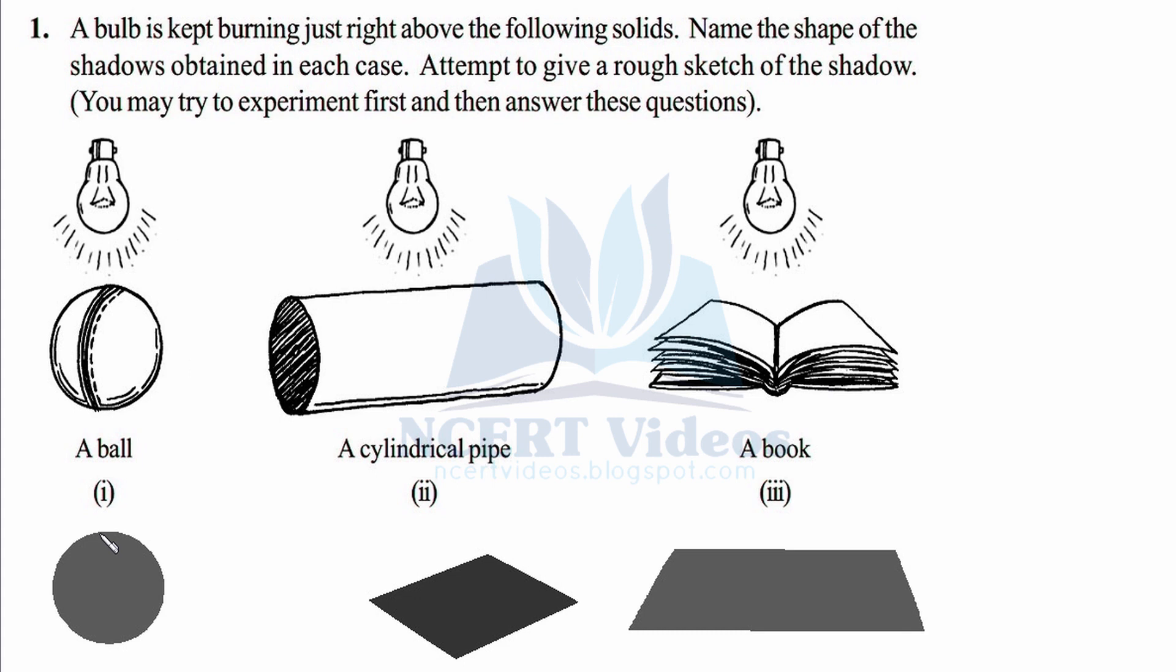Again, same setup, only the object has been changed. In this case we have a cylindrical pipe. So when you watch its shadow, it will be of a rectangular form. And if your pipe is similar to square, that is this length is equal to its diameter, then it will cast a shadow of a square also.